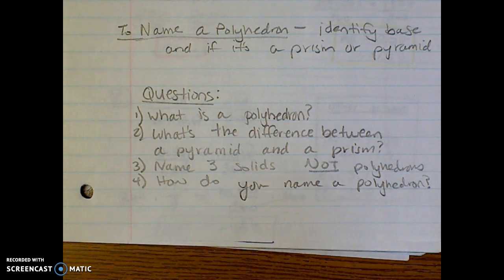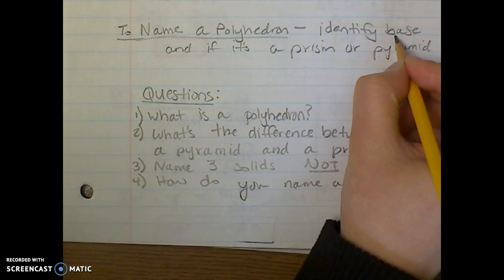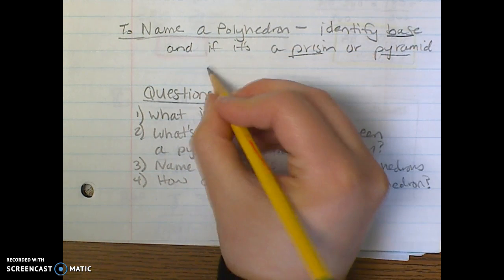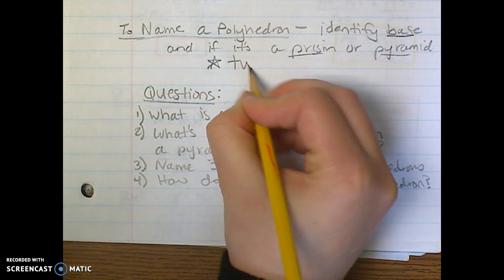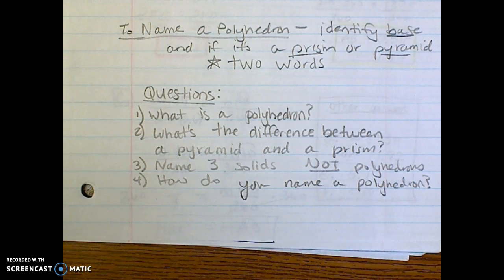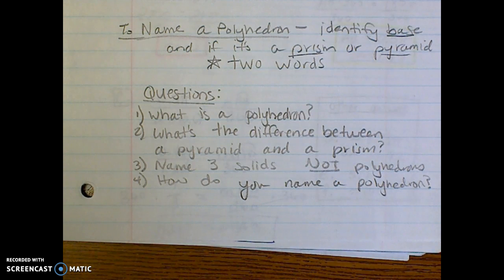So just to review: to name a polyhedron you would first identify the base shape and then tell me if it's a prism or pyramid. The key that you want to know—you always need two words to name a polyhedron. One is not enough.